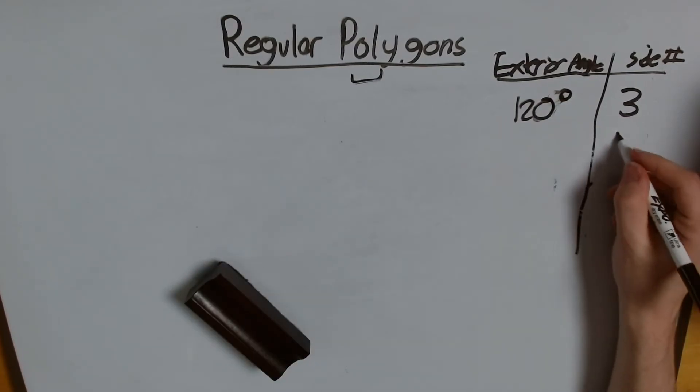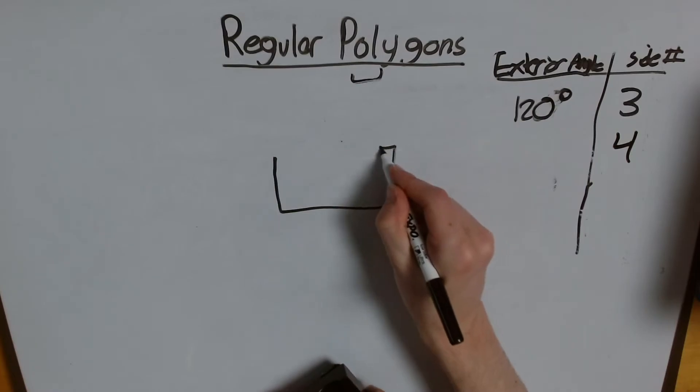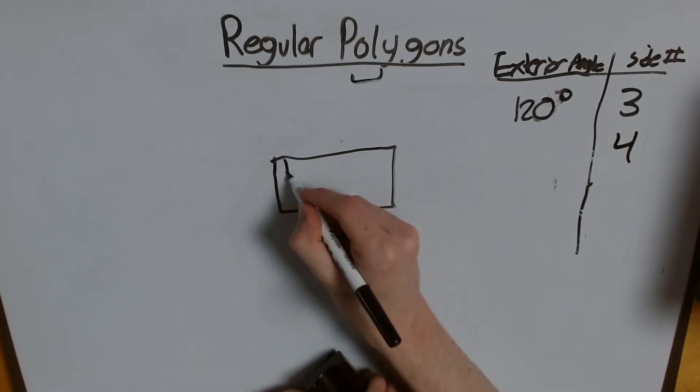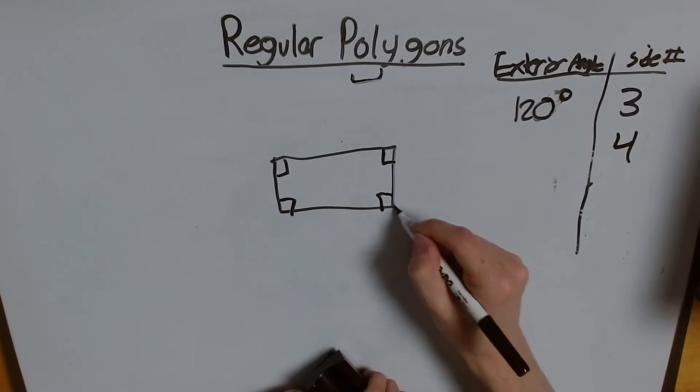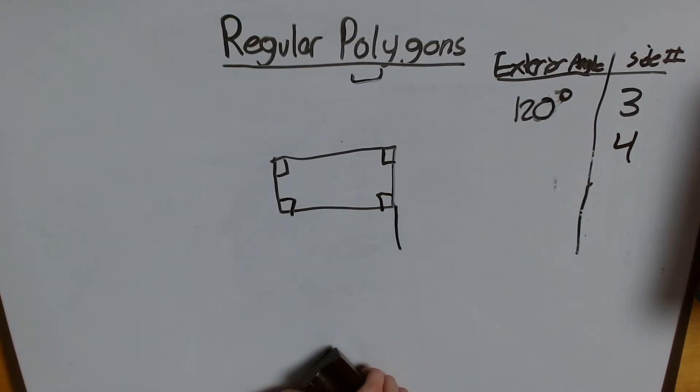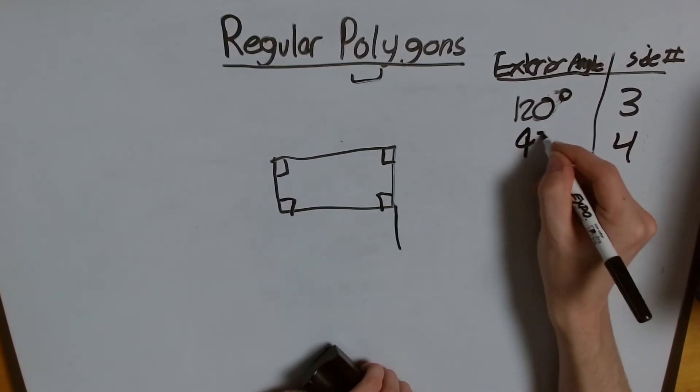What about for four sides? It's going to have a nice, convenient square. Where an exterior angle is going to be 180 minus 90, or 90 degrees.